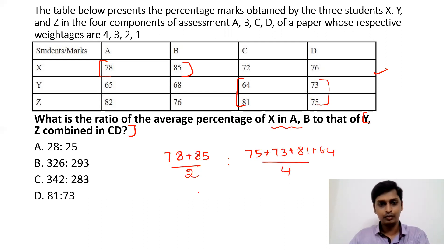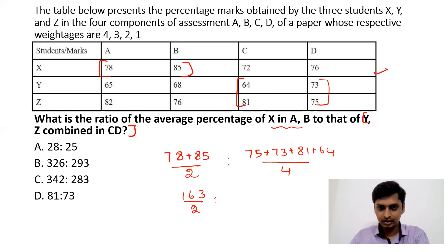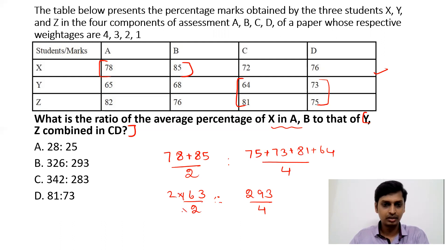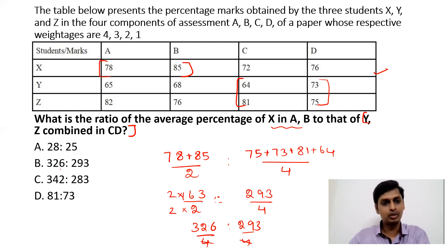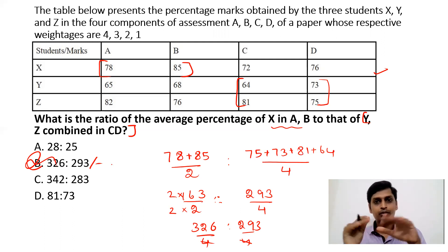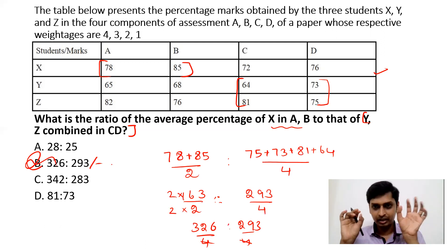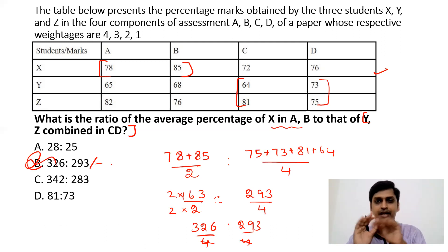78 + 85 = 163, so X's average = 163/2. For Y and Z: 73 + 75 + 81 + 64 = 293, so that average = 293/4. To form the ratio, multiply 163/2 by 2/2 to get 326/4. So the ratio is 326/4 : 293/4, and cancelling the 4s gives 326 : 293. This is the answer.